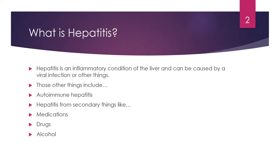What is hepatitis? Hepatitis is an inflammatory condition of the liver and it's commonly caused by viral infection. Other possible causes include autoimmune hepatitis and hepatitis that occurs as a secondary result of medications, drugs, toxins, and alcohol.